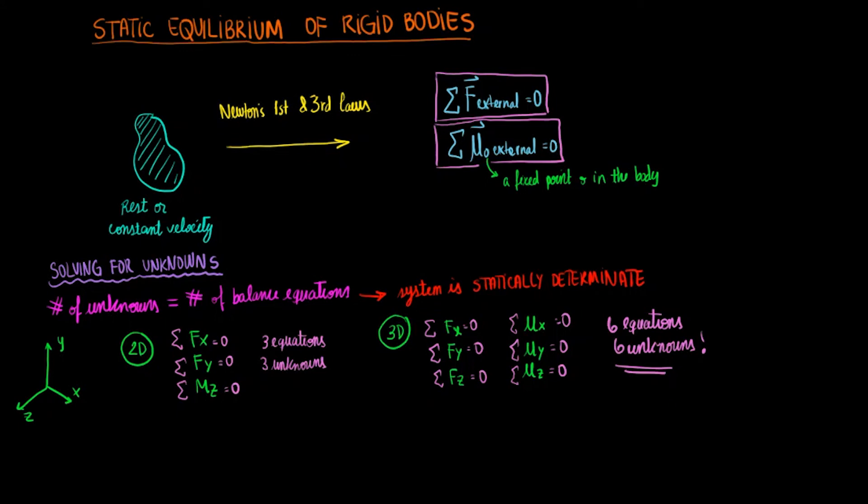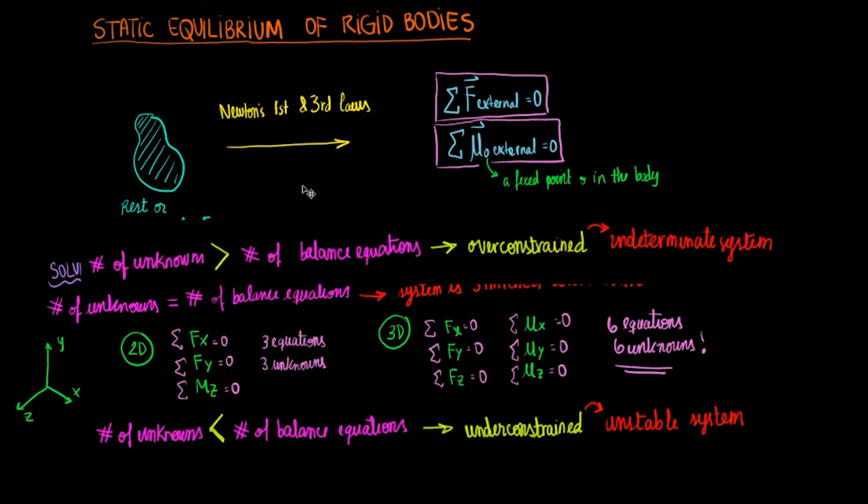When our system has too many unknowns and too little equations, our system is over-constrained. In these cases, we tend to call these systems indeterminate.